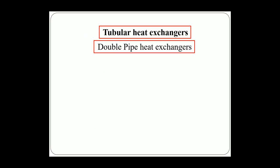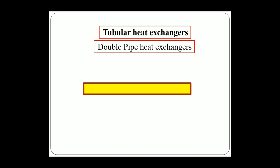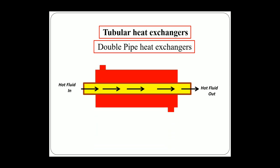First, we will look at tubular heat exchangers, also known as double pipe heat exchangers. There is an inner pipe through which a hot fluid flows, losing heat. Around this tube there is another tube whose annular portion carries the second fluid, known as the cold fluid. The hot fluid flowing through the inner tube transfers heat to the cold fluid flowing through the annular portion. This is known as a tubular or double pipe heat exchanger.